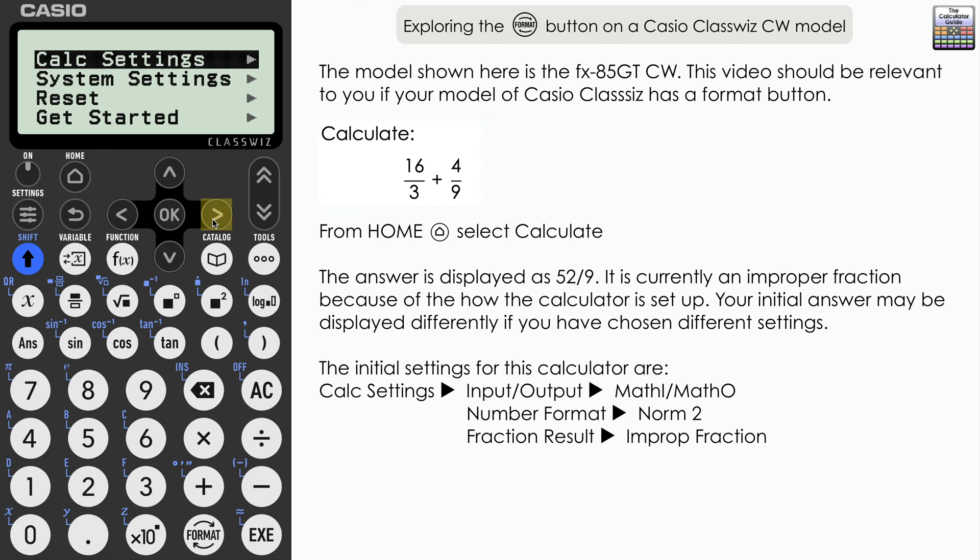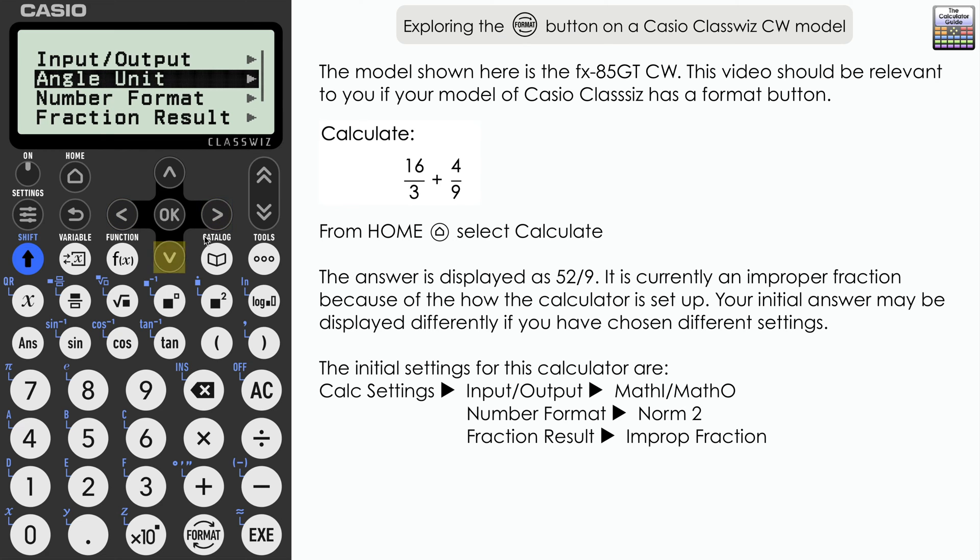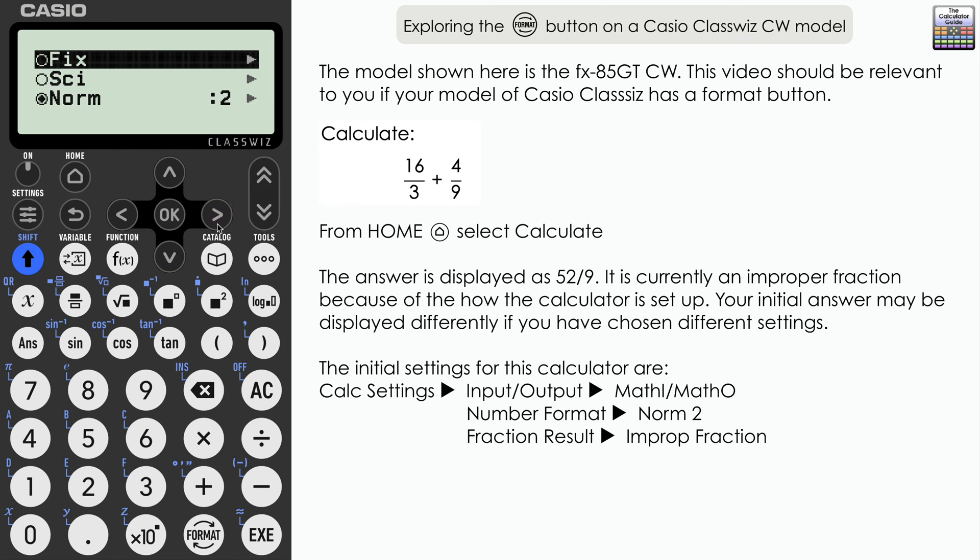Now my input output is set to Math I Math O. Now in terms of the answer that means my answer can be displayed as a fraction, or if it has a square root, a radical, or a third, or in terms of pi if that's relevant. My number format is set to Norm 2 and the fraction result is set to improper. And you can see here that we have an improper fraction 52 over 9. Maybe you have something slightly different. If so, it's to do with how your calculator is set up.